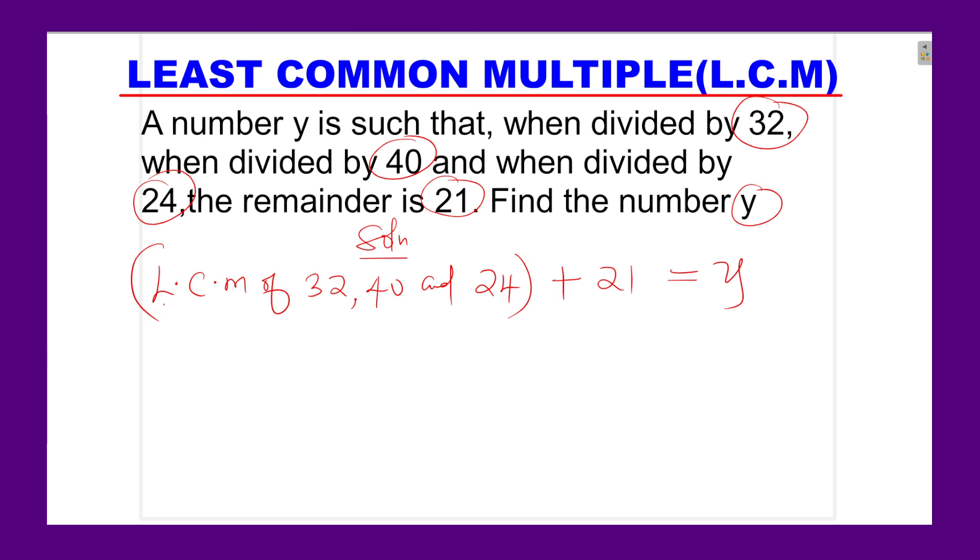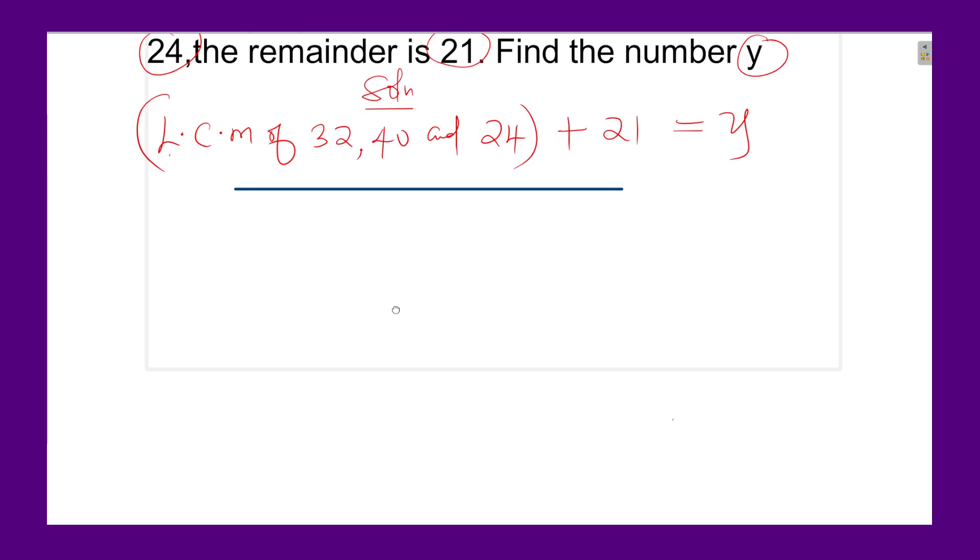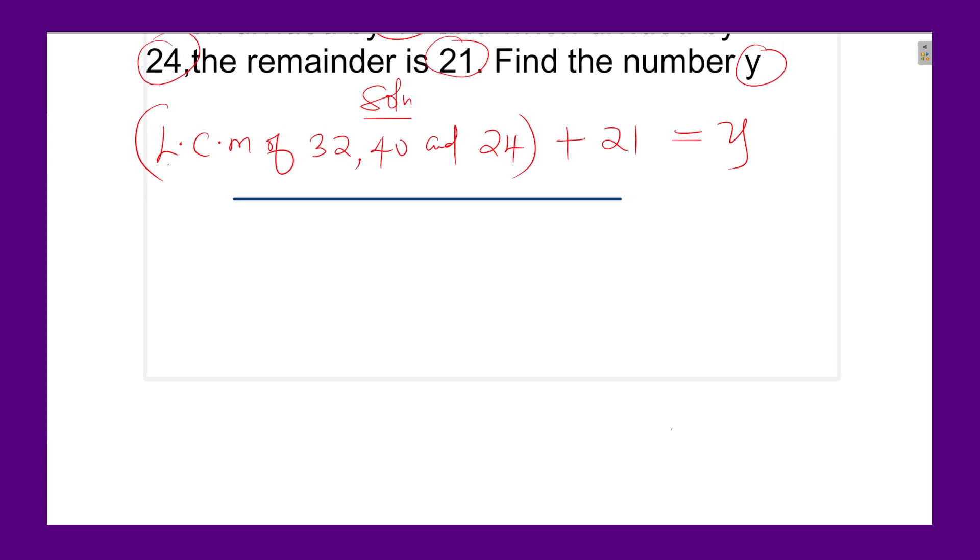So very first, we find the least common multiple of these numbers. Let us find the least common multiple. You can use the setup method of finding the LCM. So the numbers are 32, 40, and 24.